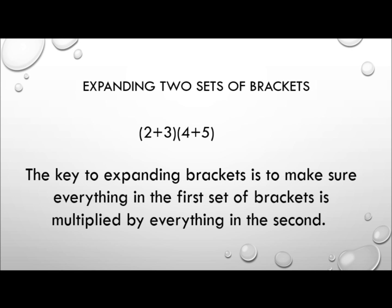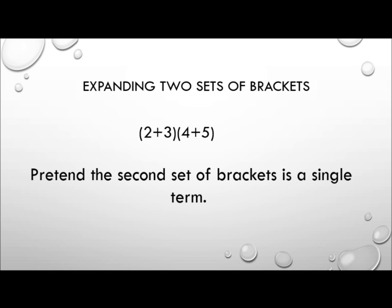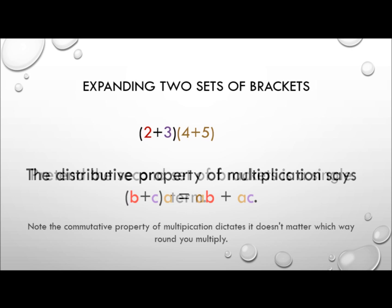The key to expanding out brackets is to make sure everything in the first set of brackets is multiplied by everything in the second. One way to do this is to take advantage of the distributive property of multiplication — pretend everything in the second brackets is just a single term. The distributive property says that a(b+c) = ab+ac. And remember, the commutative property of multiplication means it doesn't matter which order we multiply.